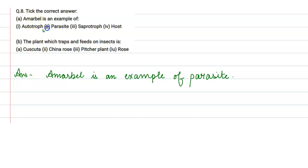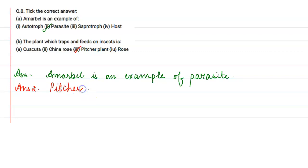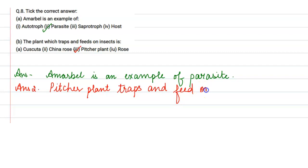Now look at the second one — it is the plant which traps and feeds on insects. The plant which traps and feeds on insects is the pitcher plant. The pitcher plant traps and feeds on insects. I hope this is clear, thank you.